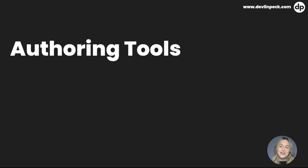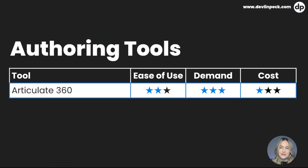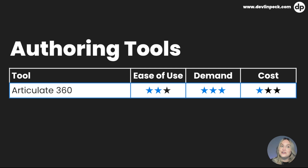Let's get started with the first category, which is authoring tools. You've probably heard of Articulate Storyline and Articulate Rise before. Both of those come in the 360 suite, and we're going to group those together because when you purchase one, you get both. We're putting ease of use at neutral — Articulate Storyline is much more difficult to use than Articulate Rise, but because we're grouping them together we're giving that a neutral score. The demand is high; we see it on almost every job description for instructional design.